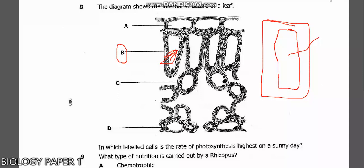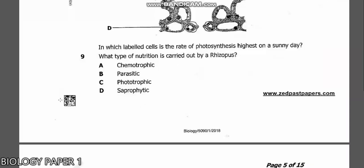Question 9: What type of nutrition is carried out by a rhizopus? A rhizopus is a type of organism that feeds on another organism in order to obtain food, and that type of nutrition is known as saprophytic nutrition. So the answer is D.